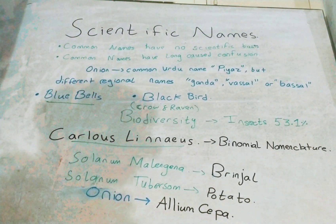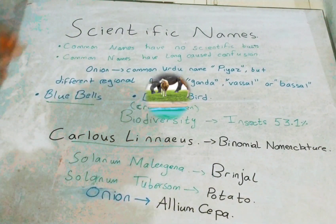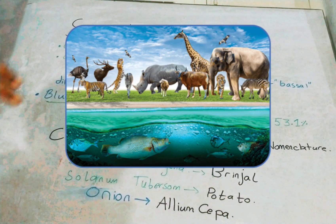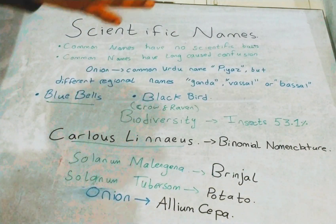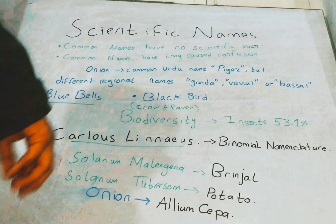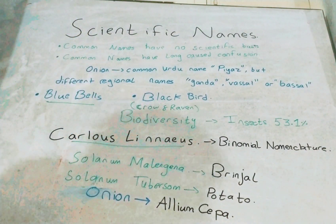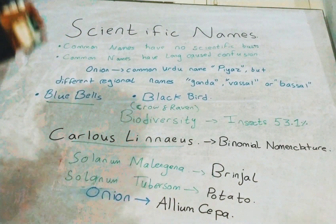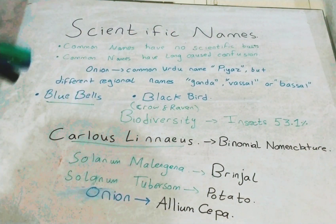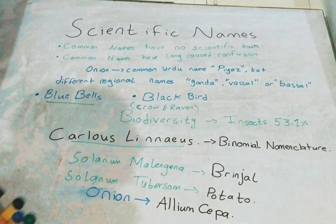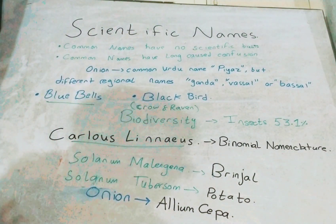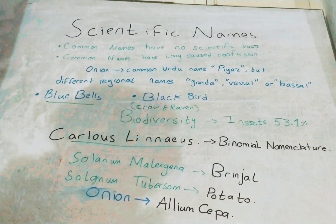Due to evolution, there are many variations in species — from kingdom Prokaryote to Protista, and from there Animalia, Fungi, and Plantae evolved. This again creates problems. For example, starfish, silverfish, and jellyfish — to a biologist, none of these fit the definition of a fish; they are simply common names with no scientific basis.